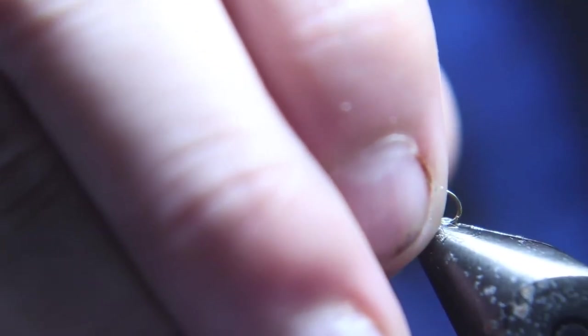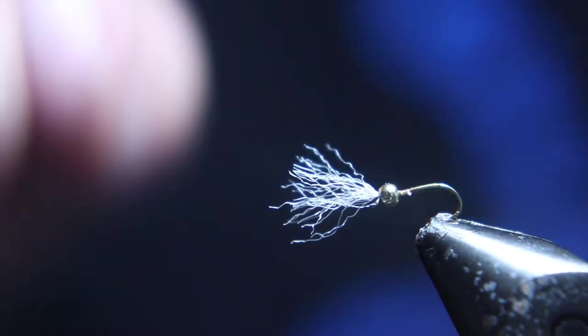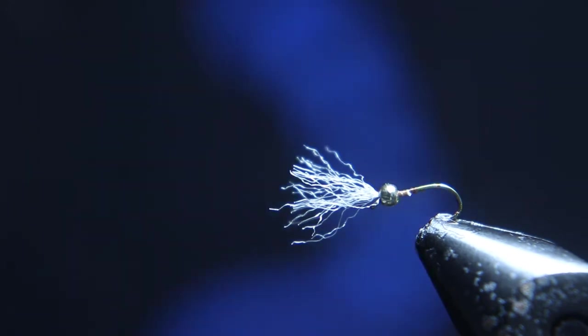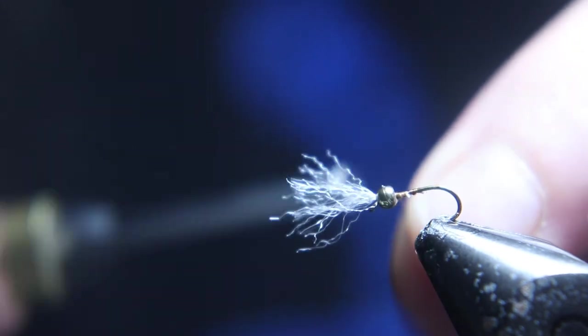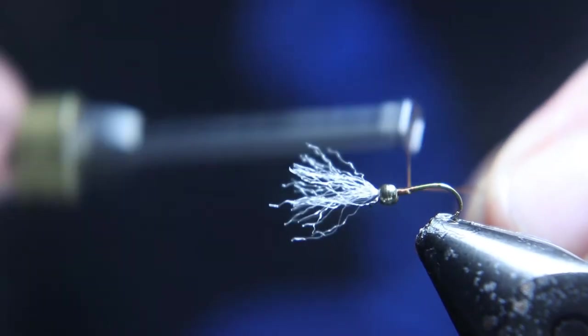Now you're going to take a 3/32nd, one of the smallest beads I can find, and put it on and slide it all the way up against that wing. And then start your thread behind the bead again.